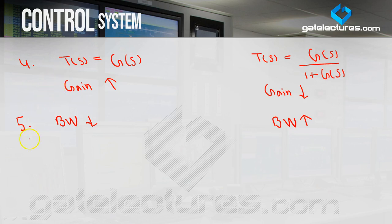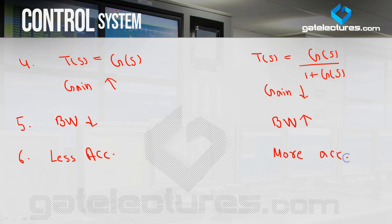The next basic difference: open loop systems are generally less accurate, and closed loop systems are generally more accurate. Therefore, for measuring or calculating the output, we generally use the closed loop system as compared to open loop systems.